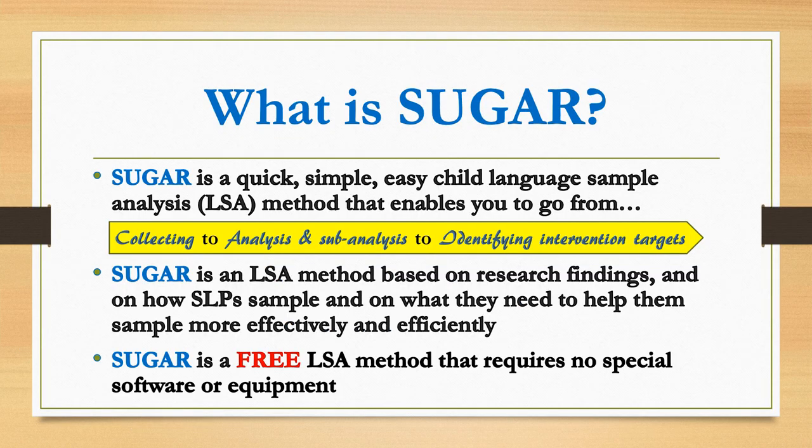First, a little background. SUGAR is a quick, simple, easy child language sample analysis, or LSA, method. SUGAR begins with sample collection and then helps you not only identify children with language impairments, but aids in identifying specific areas of concern and possible intervention targets. We've based SUGAR on research findings about how SLPs currently sample and on what they say they need to sample more effectively and efficiently.